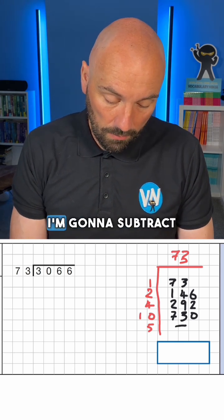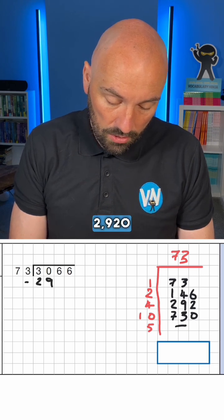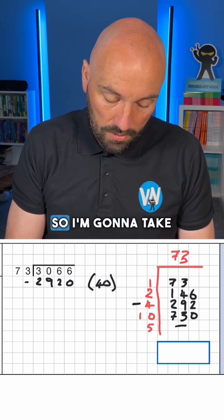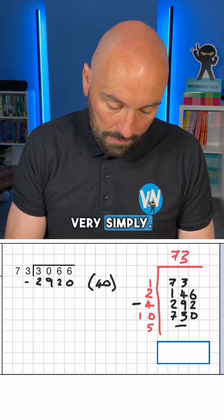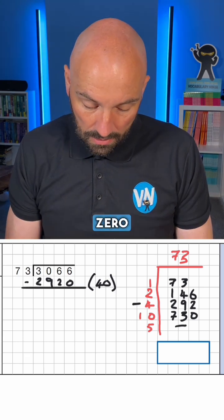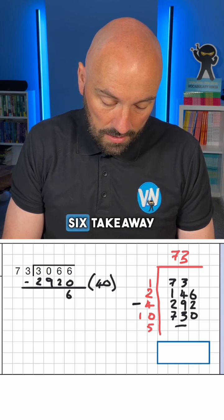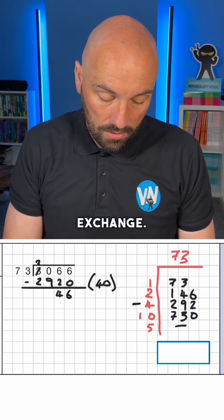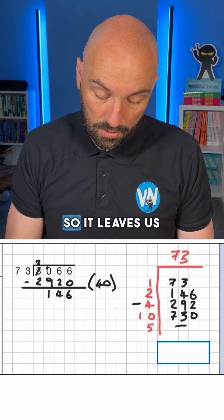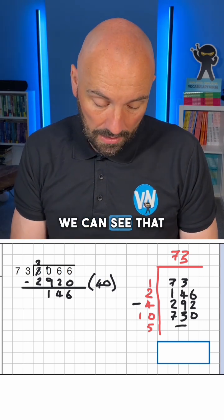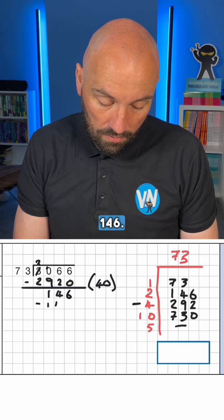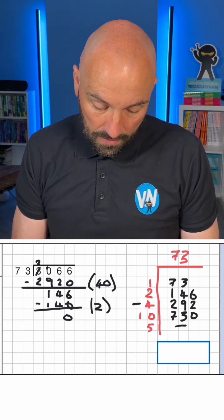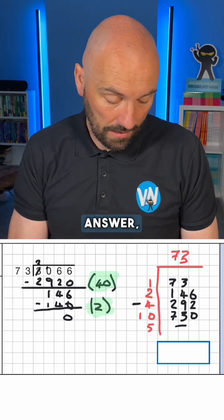I'm going to subtract 2,920 using four lots as a guide — and that is 40 lots. So: 6 take away 0 is 6, 6 take away 2 is 4, 0 take away 9 we can't do, so 10 take away 9 is 1 — and that leaves us with 146. Magically, 146 is in our partial table as 2 lots. So all I do is add together 40 and 2, and that is my answer: 42.